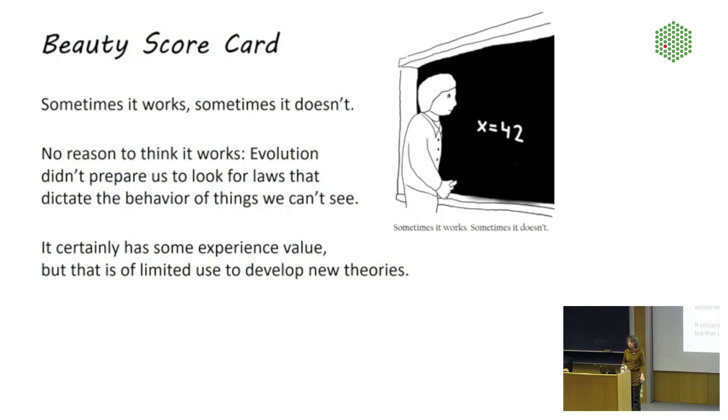So what's the scorecard for beauty? Well, sometimes it works, sometimes it does not. There's also no reason to think that it does work to develop natural laws by relying on the human sense of beauty. The human sense of beauty certainly has some hardwired part. In particular, our liking of symmetry is probably something that we are born with. Psychologists believe that it's because symmetric organisms are more likely to be healthy. Our sense of beauty also has a cultural part. It also changes as we grow up.